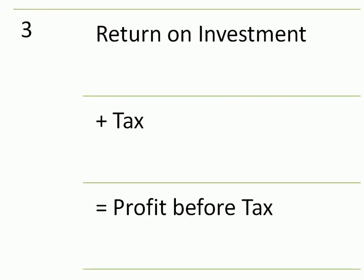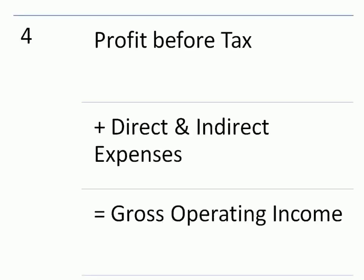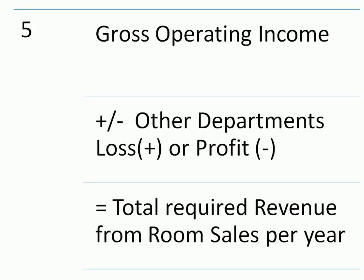Return on investment plus tax equals profit before tax. Profit before tax plus direct and indirect expenses equals gross operating income. Gross operating income plus or minus other departments' loss or profit equals total required revenue from room sales per year.